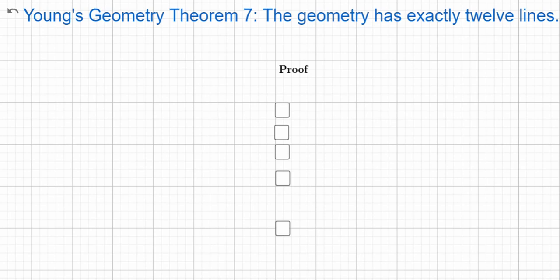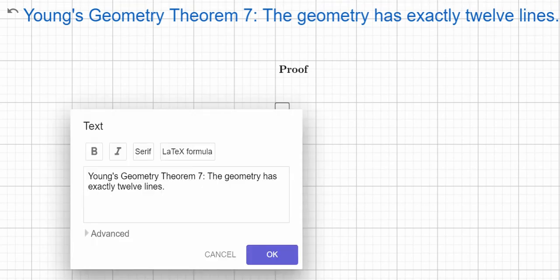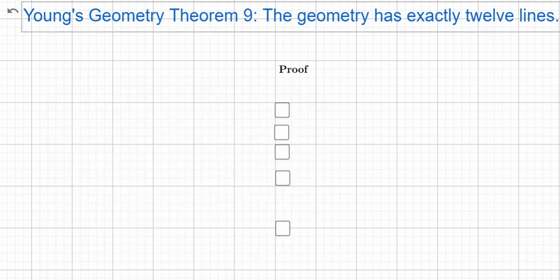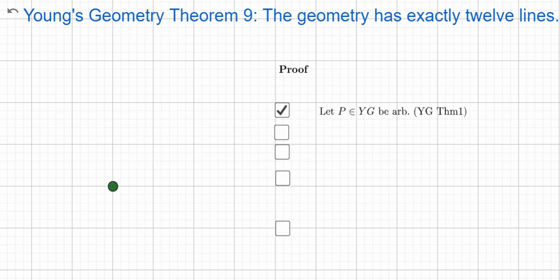Robson back with the final proof I'm going to do in this series. Wait, theorem 9, so let me change that. In the video I may have to record this again, but we want to prove that in Young's geometry the entire geometry has exactly 12 lines.